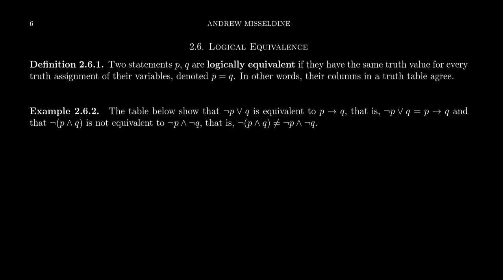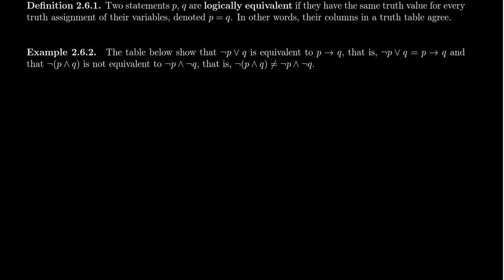Now to show that two statements are logically equivalent, what you can do is construct a truth table that involves statement P and statement Q, and show that their columns in the truth table are identical. Unlike algebraic equations, with statements there are only a finite number of assignments you can have — it's going to be a power of two based upon how many primitives are in the compound statements. So if you consider every possibility, you can exhaust all possibilities and show that they are equal to each other.